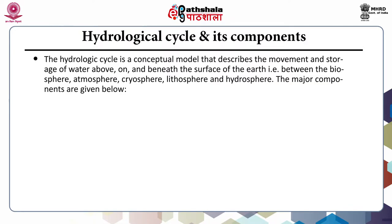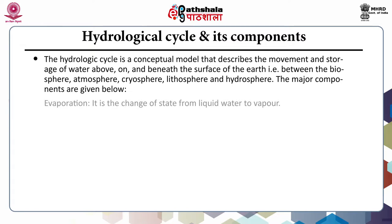The hydrologic cycle is a conceptual model that describes the movement and storage of water above, on and beneath the surface of the earth — that is, between the biosphere, atmosphere, cryosphere, lithosphere and hydrosphere. The major components of the hydrologic cycle are evaporation, precipitation, evapotranspiration, interception, infiltration and percolation.